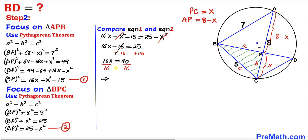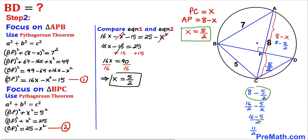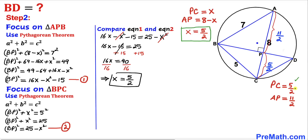Dividing both sides by 16, our X value reduces to 5/2. So X = 5/2. Therefore, PC = 5/2, and AP = 8 − 5/2 = 11/2. So our length PC is 5/2 and length AP is 11/2.